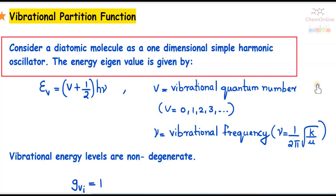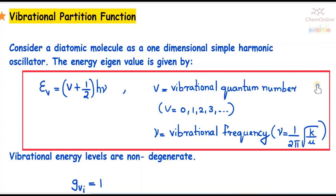Similarly, for determining the vibrational energy or while deriving the expression for a vibrational partition function, we consider the molecule — whether it is diatomic or polyatomic — as a simple harmonic oscillator. The energy of such a simple harmonic oscillator is given by ε_v = (v + ½)hν, where v is the vibrational quantum number (0, 1, 2, 3, ...), ν is the vibrational frequency given by ν = (1/2π)√(k/μ), where k is the force constant, μ is the reduced mass, and h is Planck's constant.